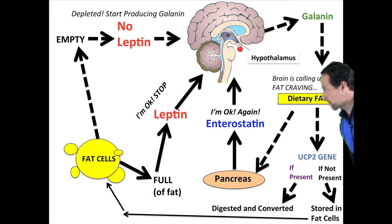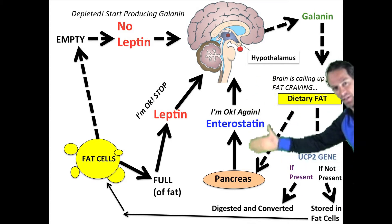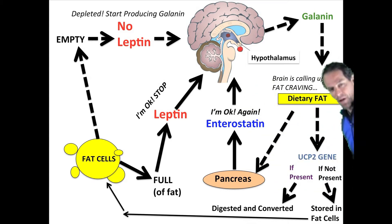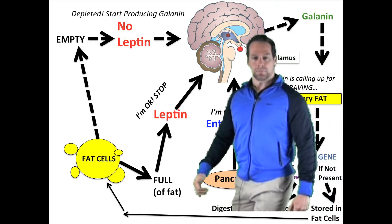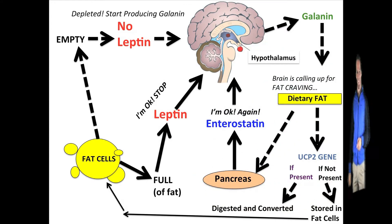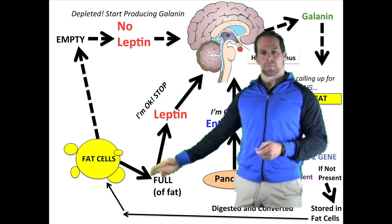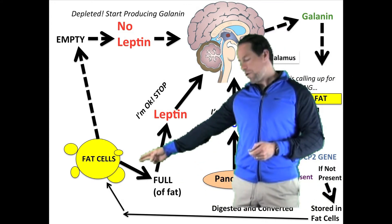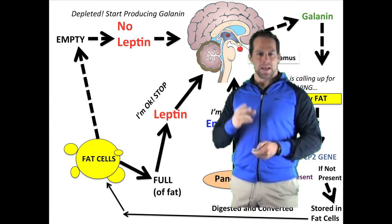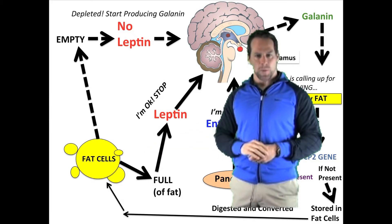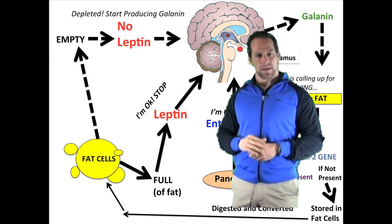As you can see, I have this big giant chart here and I'm going to go over it right now. Here is a basic fat cell. A fat cell has two purposes: one, to release fat, and two, to store fat.